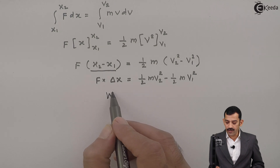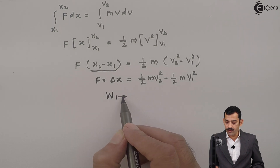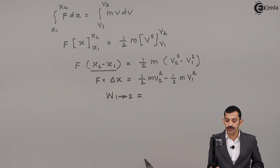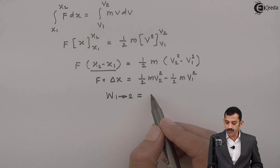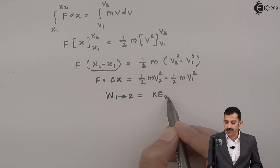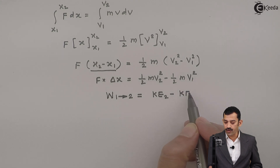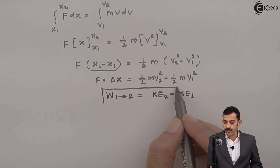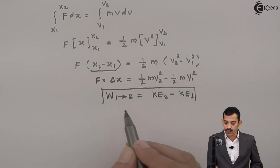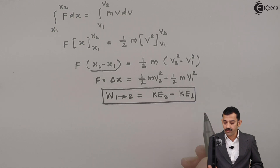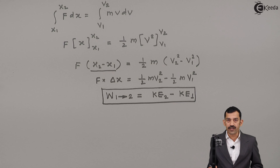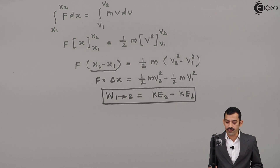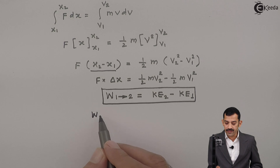Force times displacement is nothing but work done by this force over displacement Δx. Therefore this is written as: work done by forces when body moves from position 1 to 2 equals half·m·v2² minus half·m·v1². Here half·m·v2² is the kinetic energy at position 2, and half·m·v1² is the kinetic energy at position 1. This relation between work done by forces and kinetic energy of the block of mass m kg is called the work energy principle.